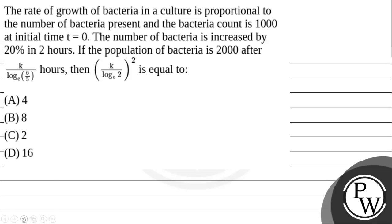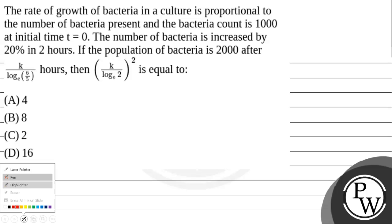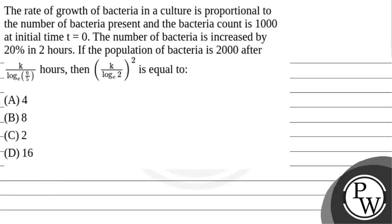Hello. Let's read this question. The question says the rate of growth of bacteria in a culture is proportional to the number of bacteria present, and the bacteria count is 1000 at initial time t equals 0. The number of bacteria is increased by 20% in 2 hours.